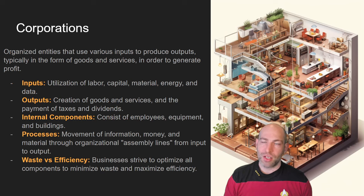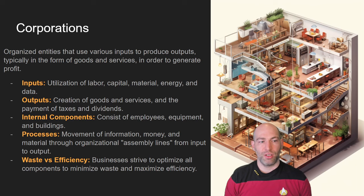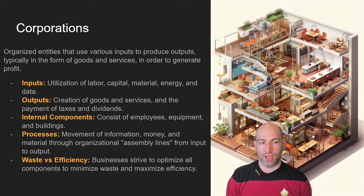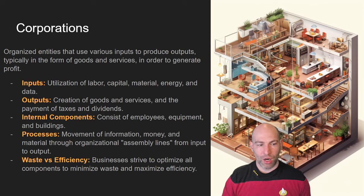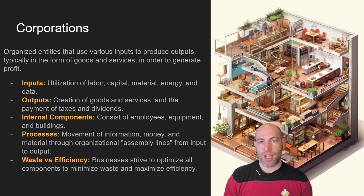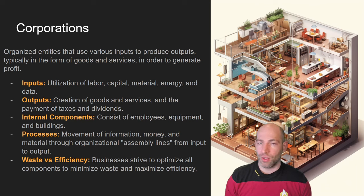Corporations can be viewed as network systems. The inputs to a corporation are things like labor, capital, material, energy, and data. The outputs are goods or services, plus the payment of taxes and dividends. There are many internal components or organs within a company — the HR department, the C-suite, the IT department — these are all systems within systems, embedded or nested systems, interconnected by circulatory and nervous systems within the organization. You can look at these either like the systems of a body or like assembly lines. Businesses are always trying to maximize the output of goods and services by minimizing waste and finding new efficiencies.